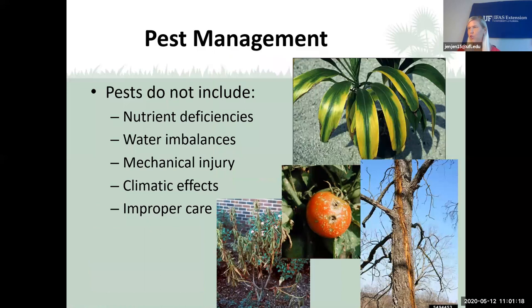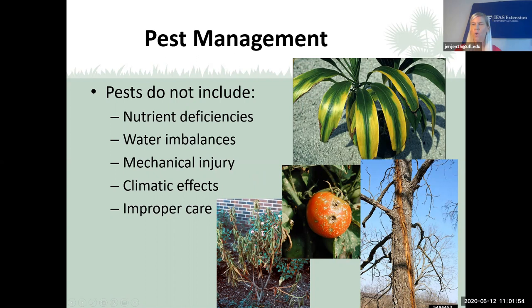We need to mention that pest management does not include nutrient deficiencies, water imbalances — whether too much or too little — mechanical injuries such as hail damage, or what I call weed-whacker blight when the landscaper gets too close to the tree and girdles it. Climatic effects like lightning strikes, cold damage, and improper care — planting too deep, too shallow, not watering or fertilizing enough — these are not pest-related issues.